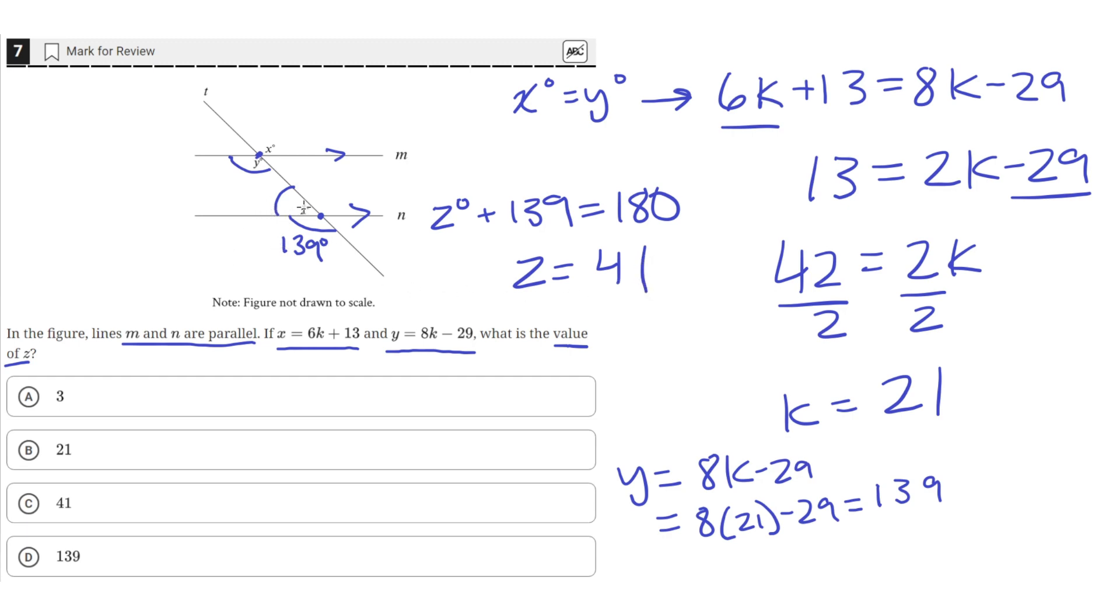So the measure of angle Z is 41 degrees, which is answer choice C.